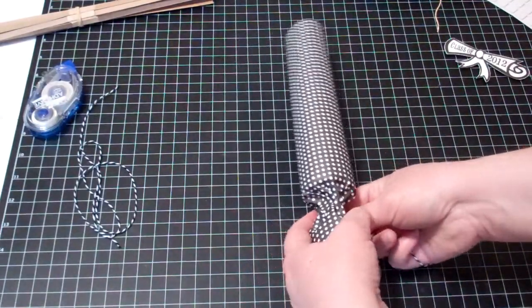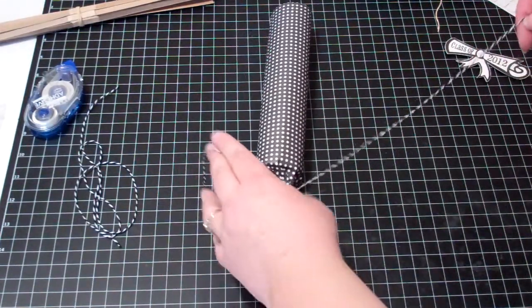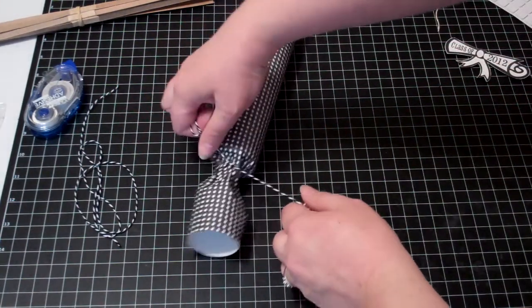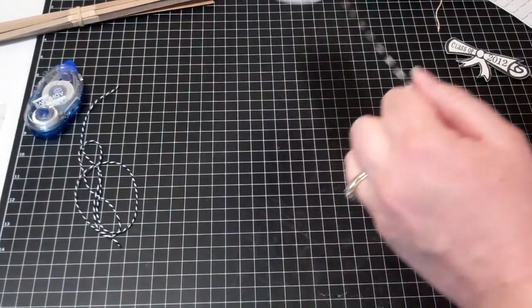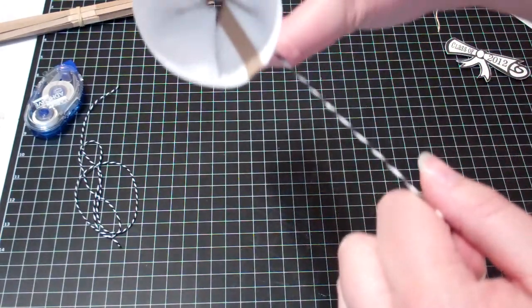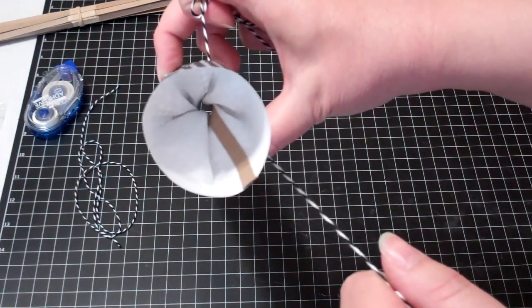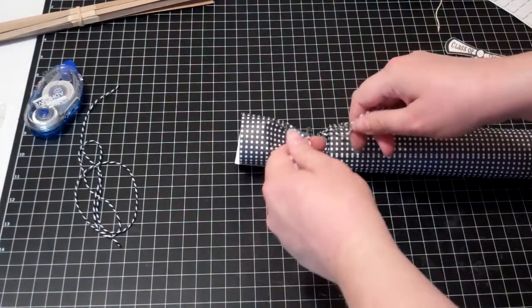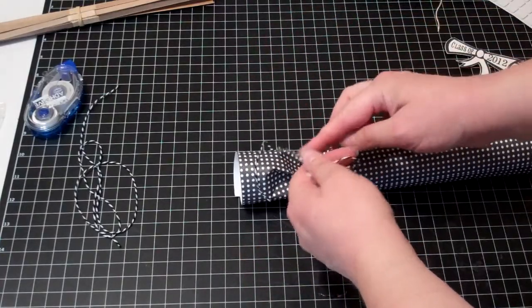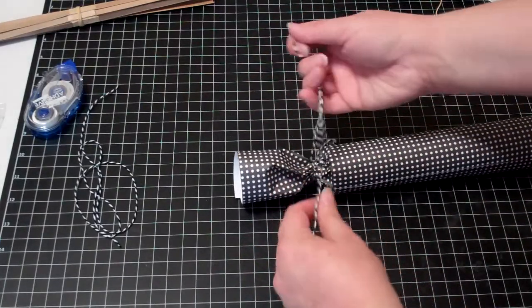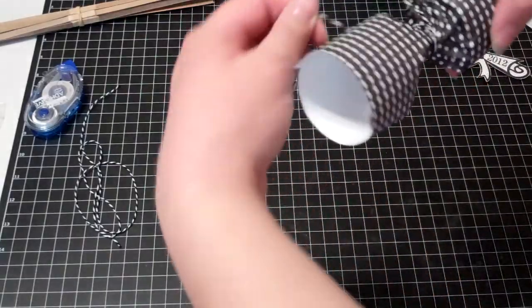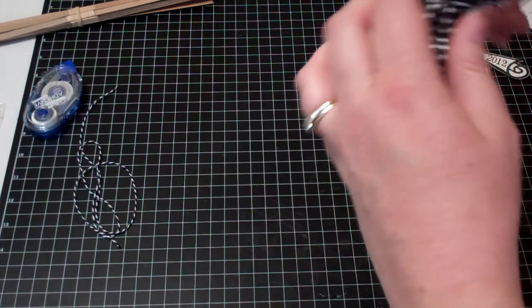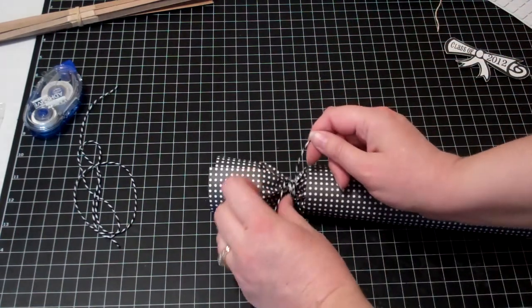All right, all we're going to do is we're going to take our twine. We're going to tie it around the end here. And you're going to pull it tight because you don't want very much light coming through, very much anything coming through the end of this tube. Tie this off. And then just wrap it around and tie it off again.